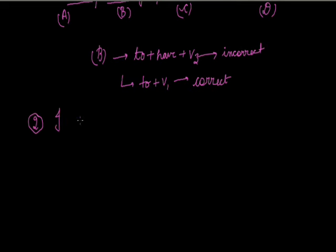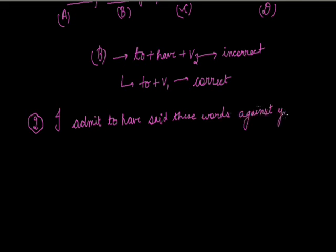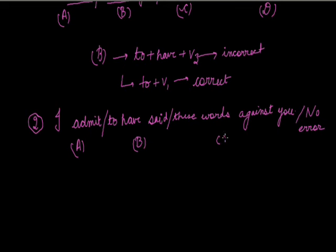Next sentence: 'I admit to have said these words against you.' Parts A, B, C, and D. There is no error in the sentence — the answer is D, no error. The use of non-finite verb 'to have said' is absolutely correct.